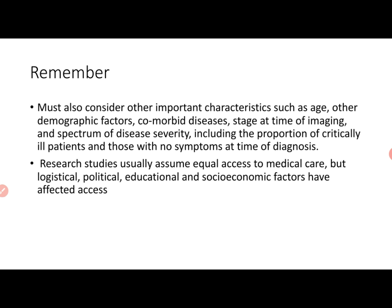Important considerations include patient characteristics such as age, demographic factors, comorbid diseases, stage at the time of imaging, spectrum of disease severity, the proportion of critically ill patients, and those with no symptoms at the time of diagnosis. This is particularly important when looking at COVID — most studies have looked at critically ill patients. What about asymptomatic patients? We haven't done enough testing, so we don't know. So understanding the underlying study population characteristics is important.